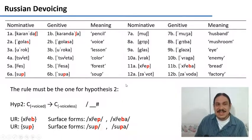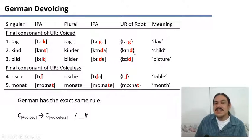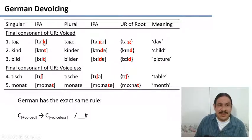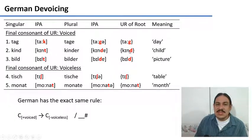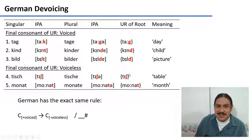This pattern is called devoicing, and it is very common in many languages. German has the exact same rule: words in German where the root ends in a voiced consonant — like 'Tag,' 'Kind,' and 'Bild' — have those consonants become voiceless when the root is free and in contact with the edge of a word, as in 'Tak,' 'Kint,' and 'Bilt.' The voiced consonant is preserved if the root has an additional vowel, for example from the plural: 'Tage,' 'Kinder,' 'Bilder.' And like Russian, if the root ends in a voiceless consonant, the rule cannot apply because it only targets voiced consonants.